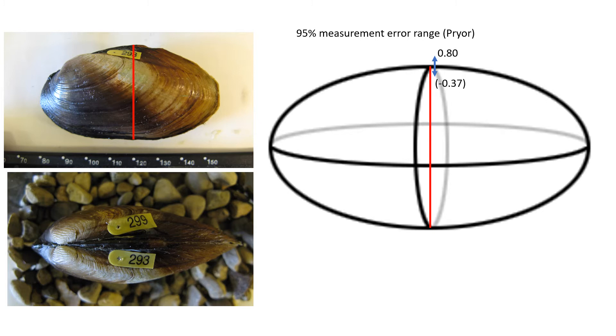And I applied the same basic protocol to those data for shell height that I came up with. I used the same method to analyze those as did Downing and Downing. And the limits on the 95% error range, in my case, ranged from negative 0.37 to positive 0.80.